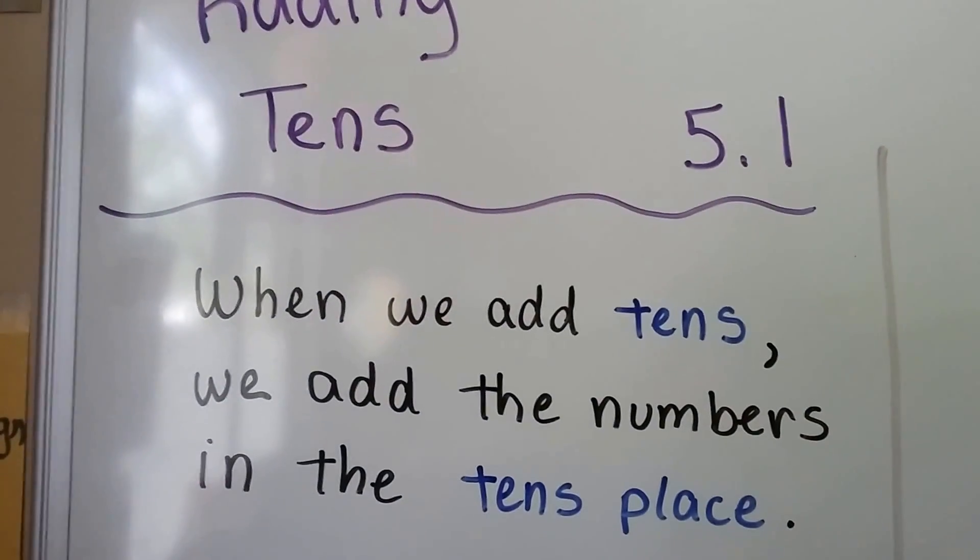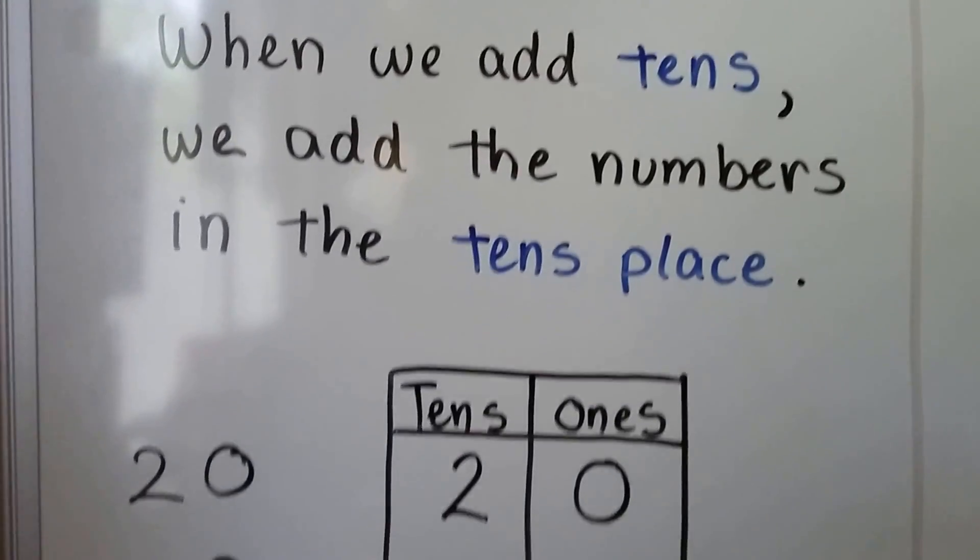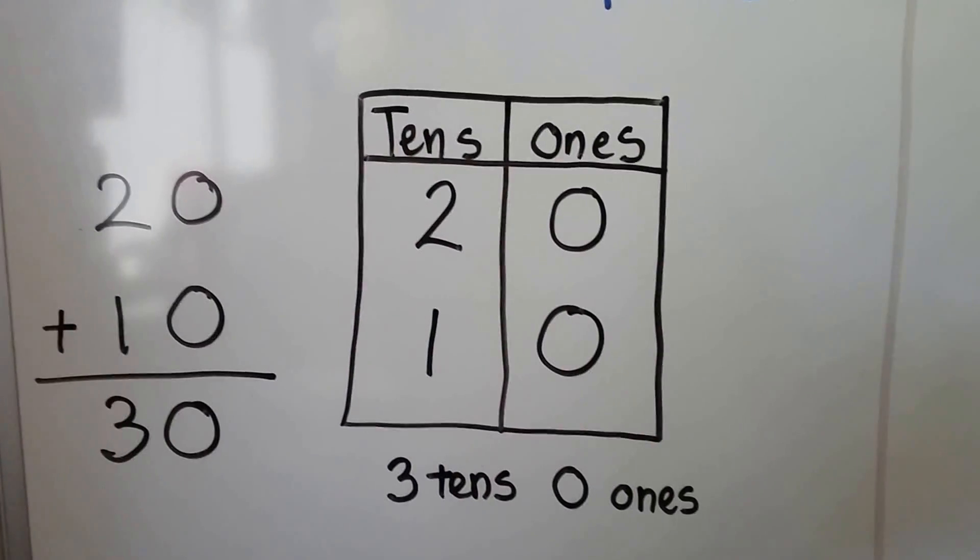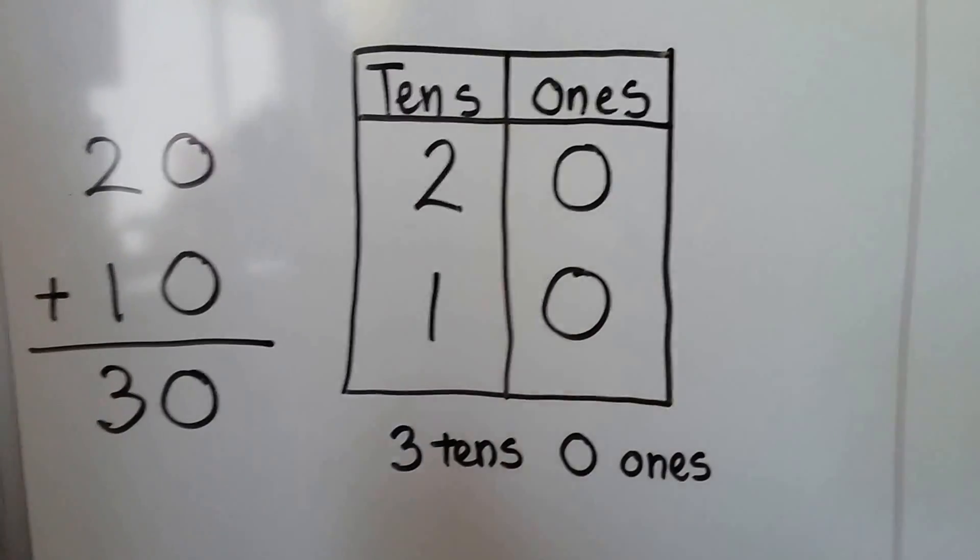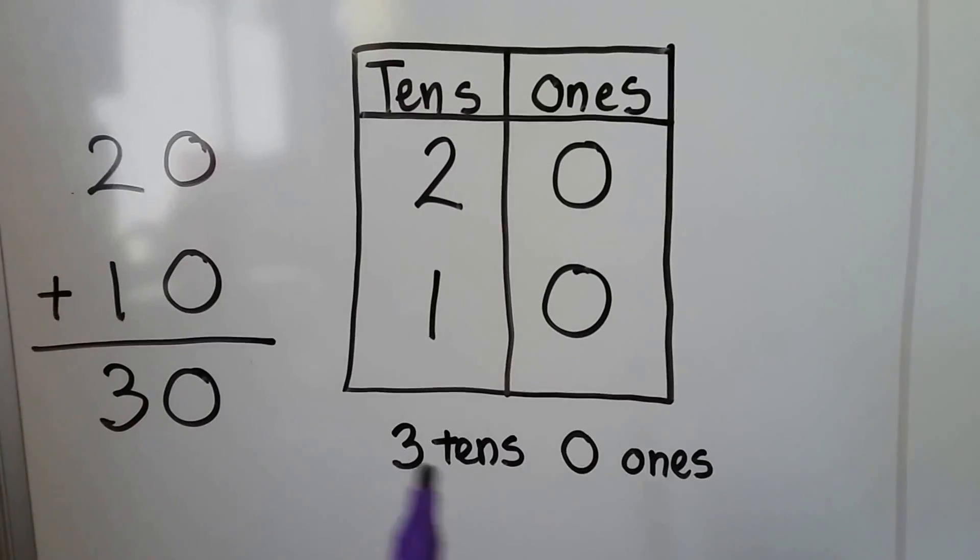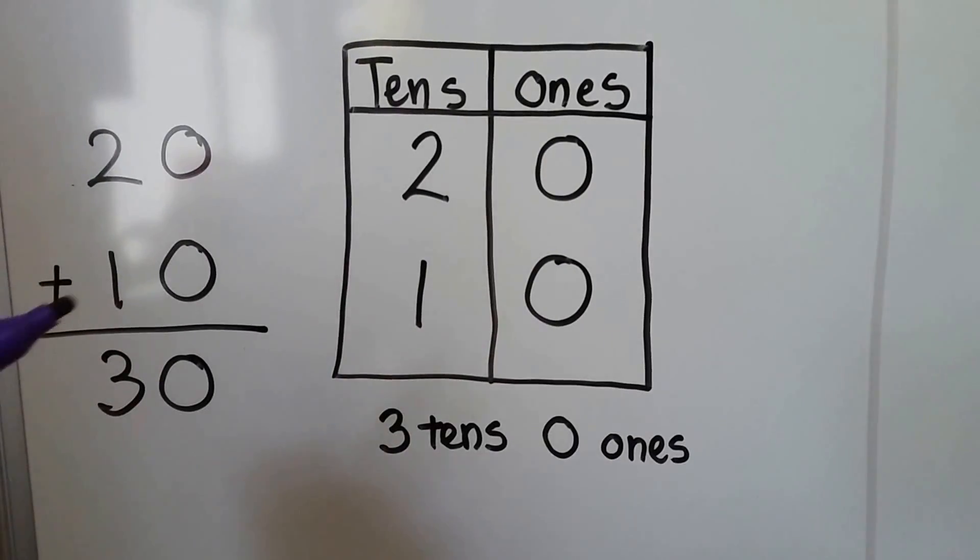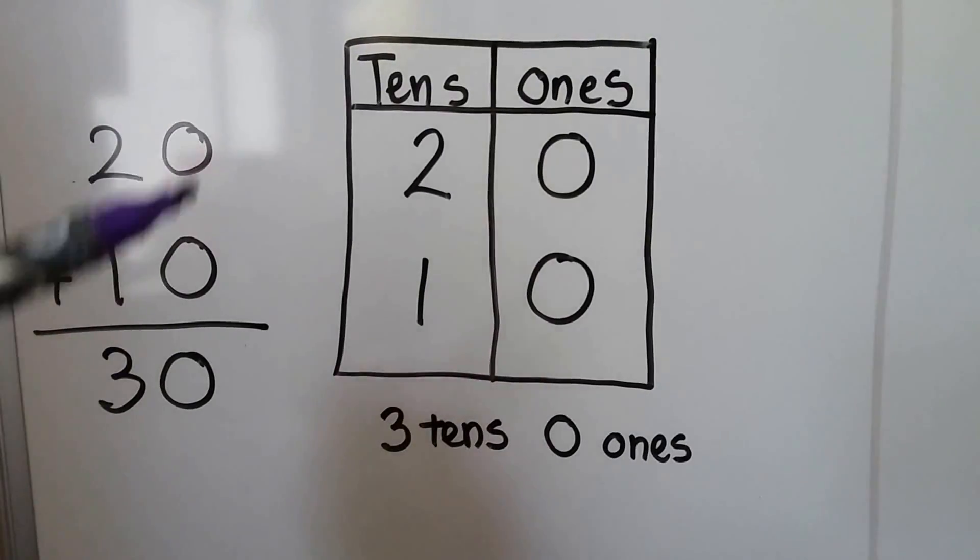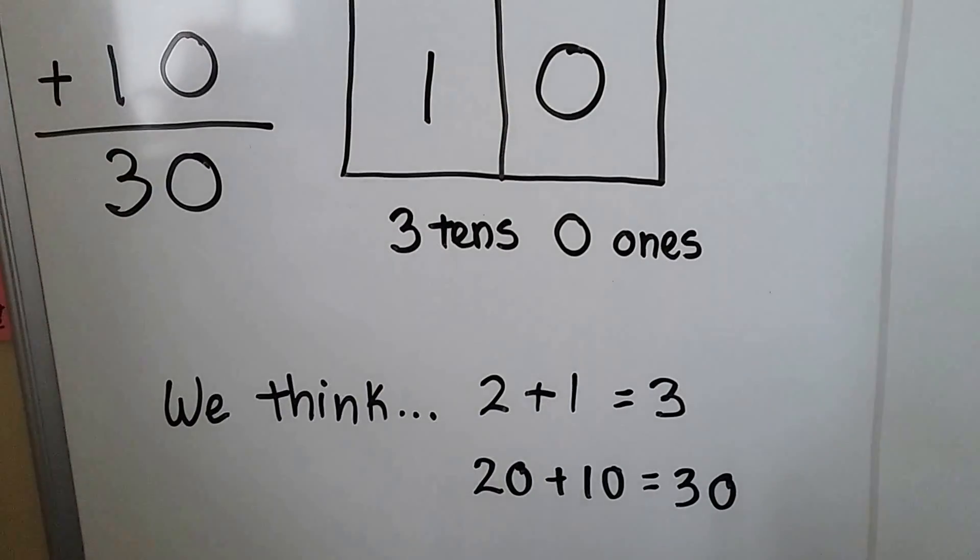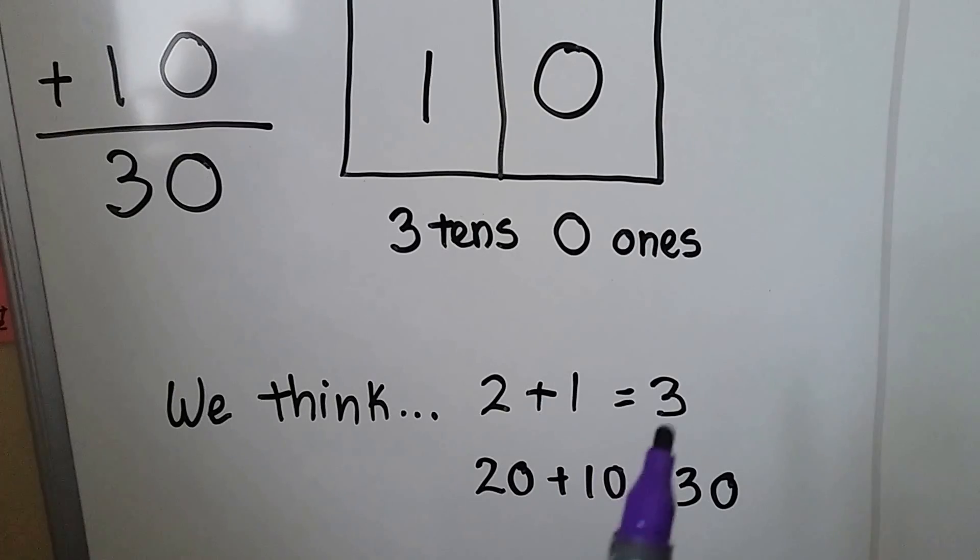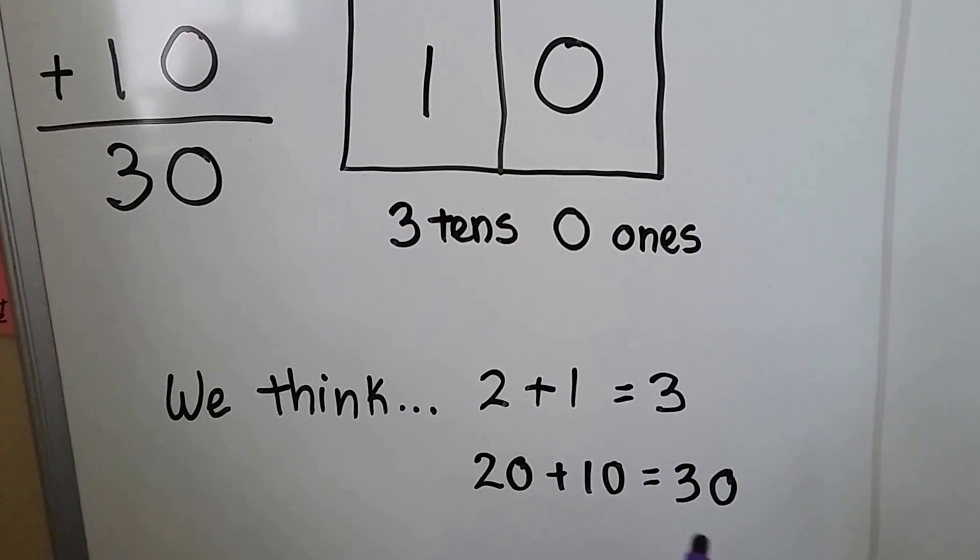When we add tens, we add the numbers in the tens place. If we have two tens and one ten, when we add them together, we get three tens, and there's still zero ones. See? We add the two plus the one and get a three, and zero plus zero is zero. We just think two plus one is three. Twenty plus ten equals thirty.